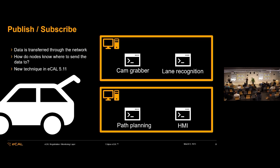For example, we can have a camera grabber, a lane recognition, a path planning, and an HMI. The camera grabber would grab from some proprietary PCIe device some image data and send it over to the lane recognition. The lane recognition would do some computations and send the output to the path planning and to an HMI where it is displayed.